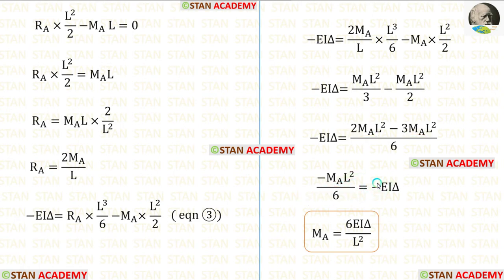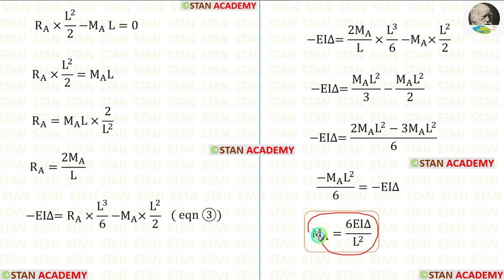Then, we can eliminate the negative sign. Finally, for MA, we are getting 6EI·delta/L².